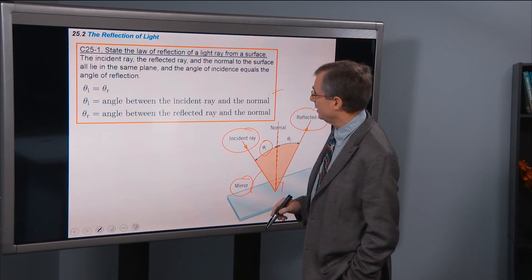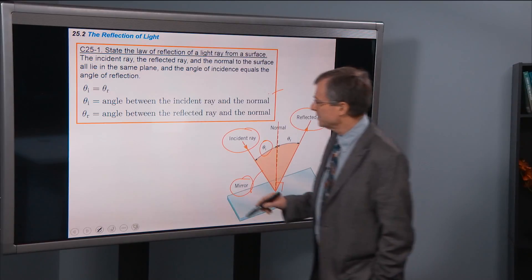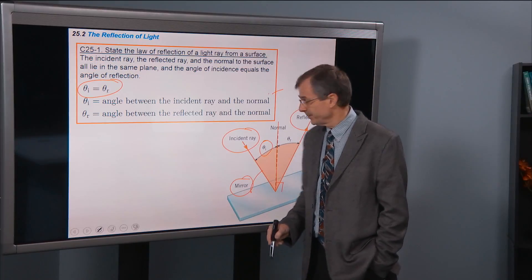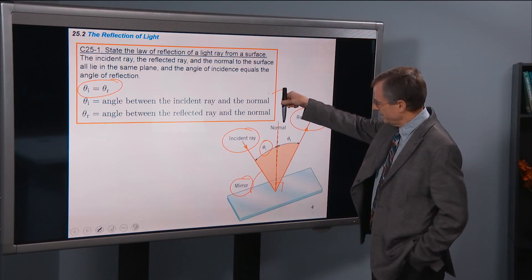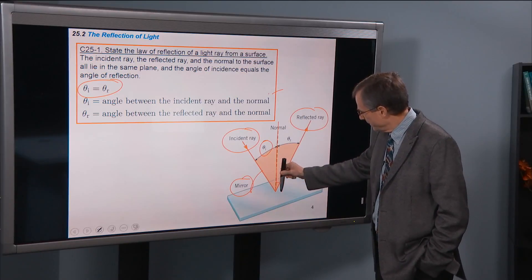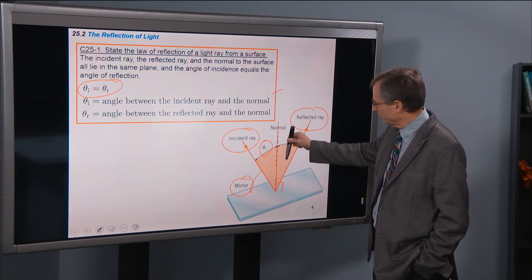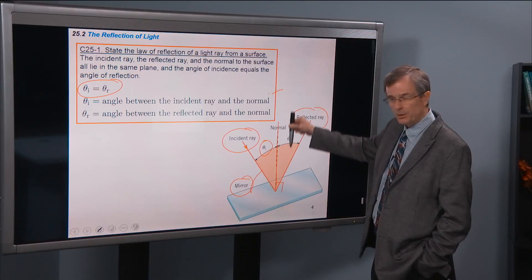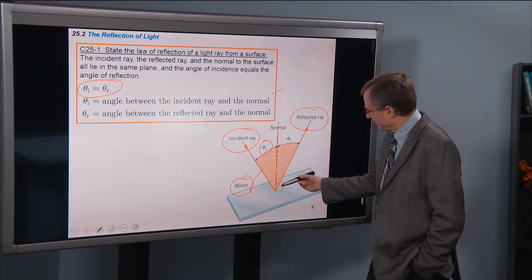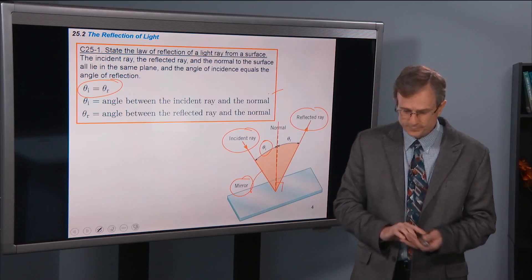And the law of reflection is that the angle of incidence is the angle of reflection. So if you come in at a small angle of incidence, near normal incidence, then you'll have a small reflected angle as well. If you come in at a wide angle, then you'll come off at a wide angle. That's all there is to it.